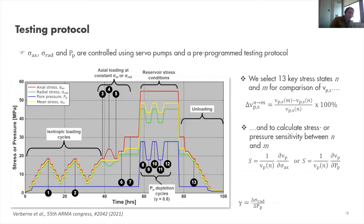The testing protocol shows stress or pressure versus time for experiments lasting up to 100 hours. In each experiment we apply two and a half isotropic loading cycles — ramping up axial stress and radial stress simultaneously — followed by axial loading at constant mean stress, then imposing reservoir stress conditions under which we impose pore pressure depletion cycles at a constant ratio of the change in radial stress over the change in pore pressure, simulating pore pressure drawdown from a reservoir.